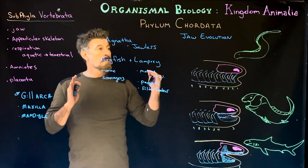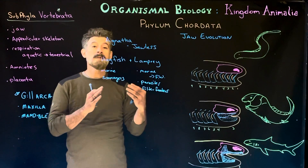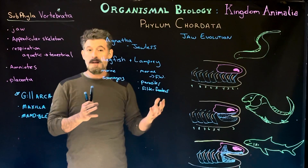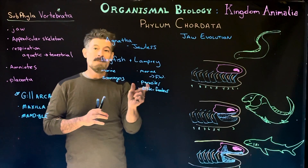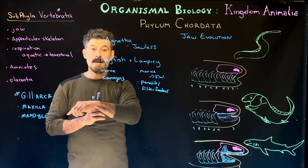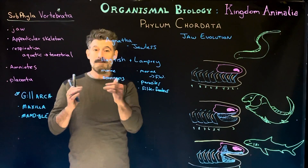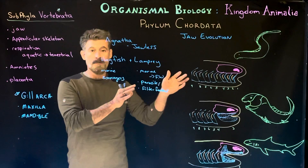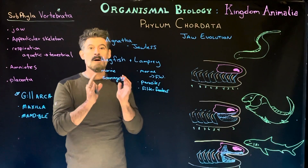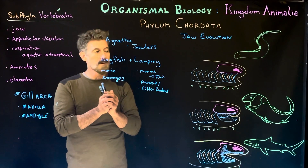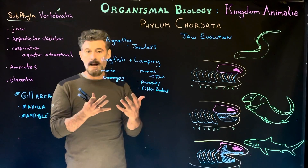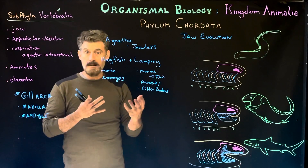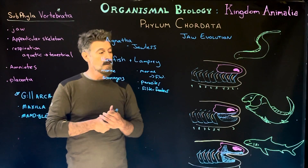An interesting thing about members of this group is that some of them, as they develop, their larval stage looks almost exactly like the amphioxus of the previous subphylum. If we look at the subphylum Cephalochordata and what an adult organism looks like, and compare that to the larval form of some of these organisms, they're incredibly similar. It's really difficult to tell the difference by looking at them quickly, and even if you look in detail, many of the features are very similar between them.